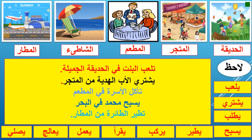Now we can use the verbs with the nouns and make our sentences. I'll give you some examples and you can simulate. Tal'ab al-bint fi al-hadiqa al-jamila — the girl plays in the beautiful garden. Yashtari al-ab al-hadiya min al-matjar — the father buys a present from the mall.